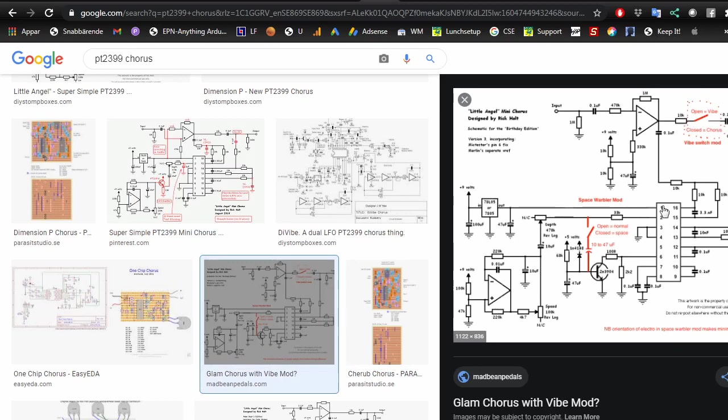This is the one I'm going to make. This one has a few alterations. We get a space warble mod and we get the vibe switch mod, so adding two switches we get a chorus with a few extra effects.